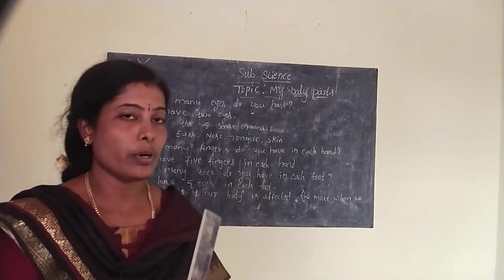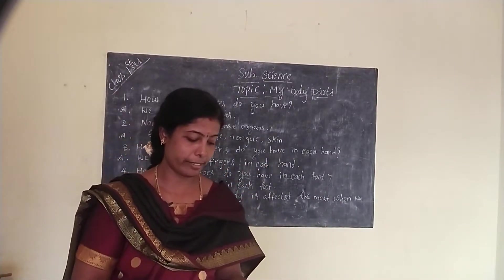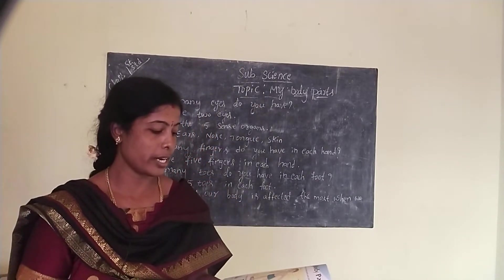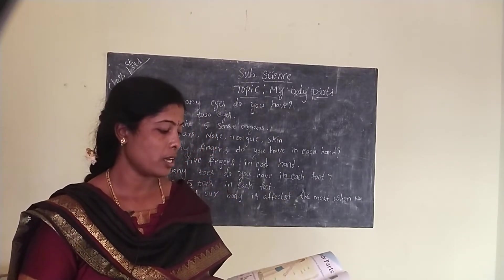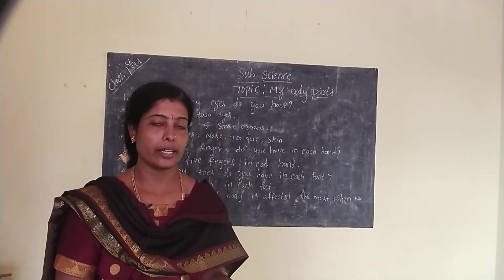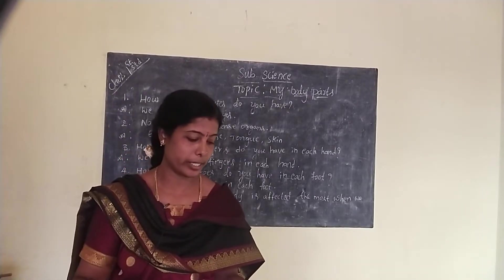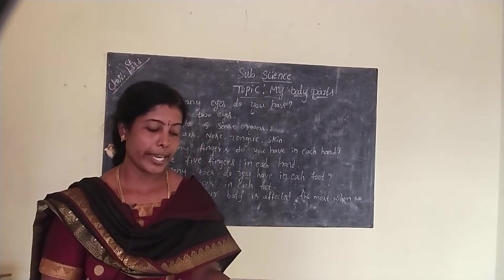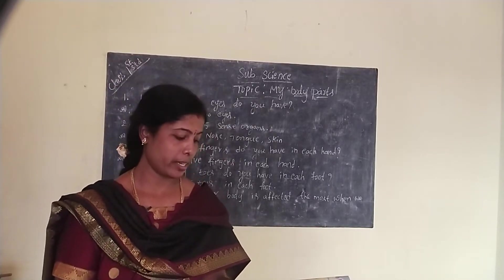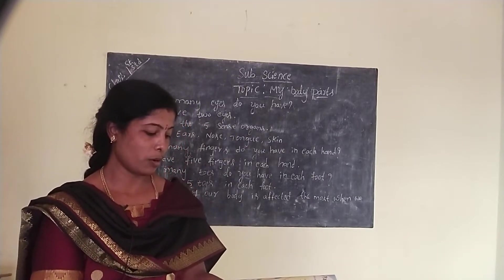Different body parts help us to do different activities. For example, hands and legs. Our hands help us to hold, push, and also lift things. And our legs help us to walk, run, play, and kick the ball, etc.